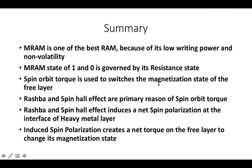To summarize: MRAM is one of the best emerging memory technologies because of its low writing power and non-volatility. The MRAM state of 1 and 0 is governed by its resistance state. Spin orbit torque is used to switch the magnetization state of the free layer. The Rashba and Spin Hall effects are the primary reasons for spin orbit torque. Both effects induce a net spin polarization at the interface of the heavy metal layer, and the induced spin polarization creates a net torque on the free layer to change its magnetization state. Thank you so much for watching — please like this video and share it with your friends!